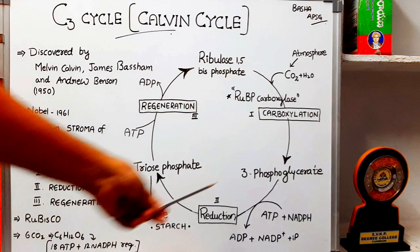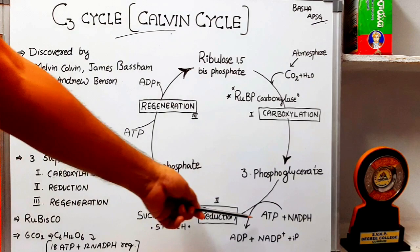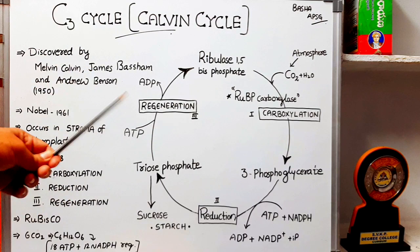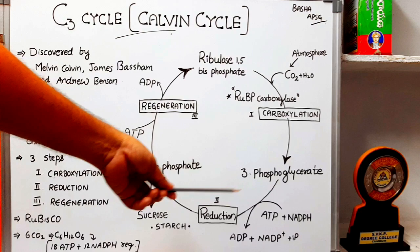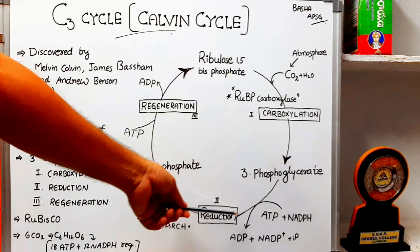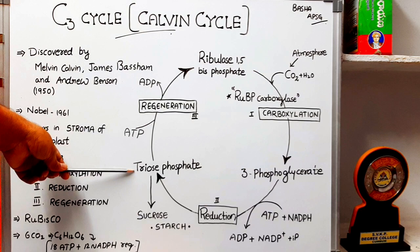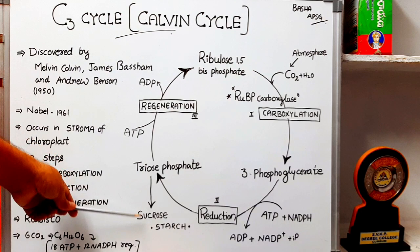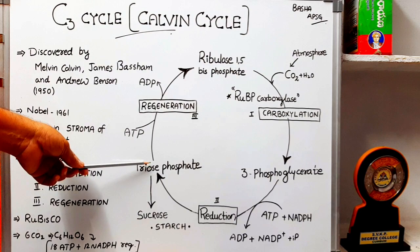The next step is called reduction. In this reduction step, ATP and NADPH are required. These are called assimilatory power, and this assimilatory power is produced during light reactions of photosynthesis. ATP means adenosine triphosphate; NADPH is nicotinamide dinucleotide phosphate. The result of this second step is the formation of triose phosphate. A few molecules of triose phosphate then convert into sucrose, which is the main final product of photosynthesis.